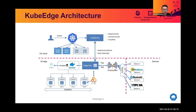From the overall architecture, KubeEdge is targeting providing the functionality of managing both the nodes in the cloud and the nodes on the edge within the same Kubernetes API cluster. In the cloud, we have the cloud core, which is the component to deal with shadow management for the applications and the resources on the edge.